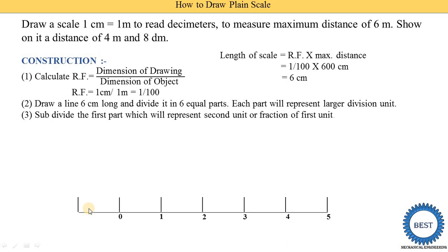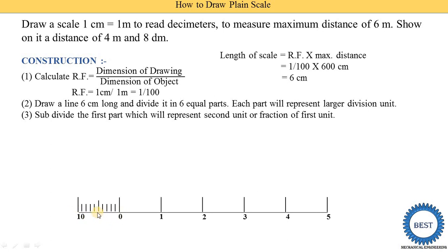Now, subdivide the first part, which will represent the second unit — the fraction of the first unit. From 0 to 5 is used to indicate meters, and the left side from 0 indicates decimeters. This first part is 1 meter, and in 1 meter there are 10 decimeters, so we divide this 1 centimeter into 10 parts.